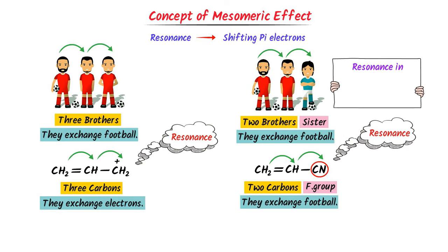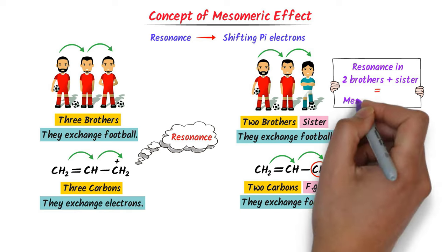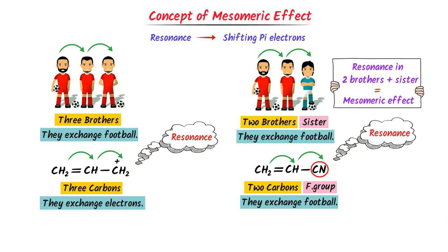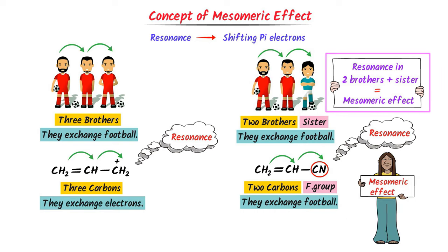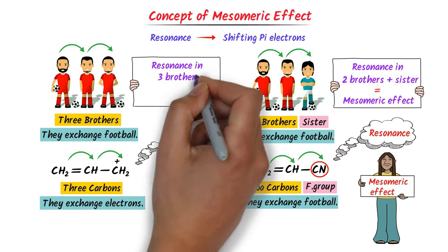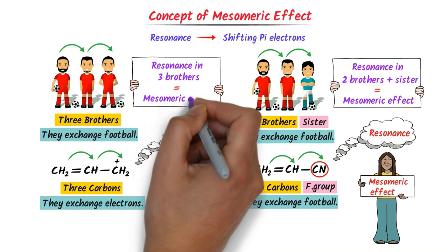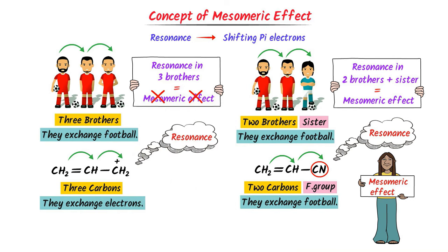If resonance occurs in two brothers and a sister, it is also known as mesomeric effect. So this resonance is also known as mesomeric effect. Secondly, if resonance occurs only in brothers, it is not a mesomeric effect.